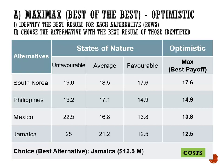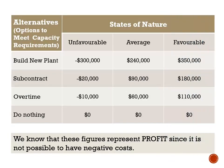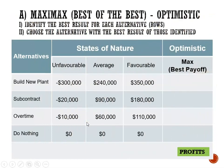Here we have another scenario where we're looking at alternatives to meet our capacity requirements. The figures here represent profits. Our possible decision alternatives are: build a new plant, subcontract, do overtime, or do nothing.